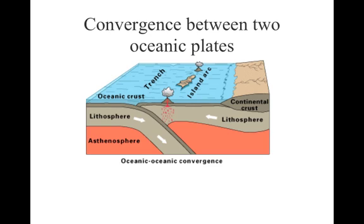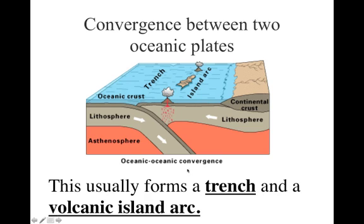If we have two oceanic plates meeting, it's oceanic versus oceanic, so one of them is going to get pushed down. Again we are going to get a trench forming in the ocean. This time there's no land for the volcanoes to make mountains, so those volcanoes make mountains under the ocean. Once they finally break through the ocean surface, they're an island. So this is what's called a volcanic island arc instead of a mountain arc.